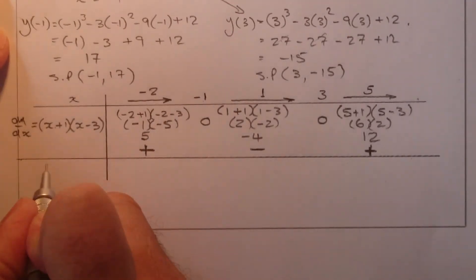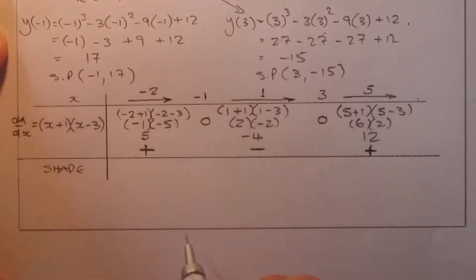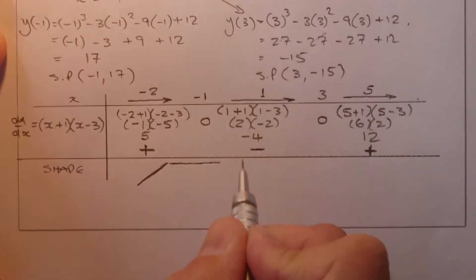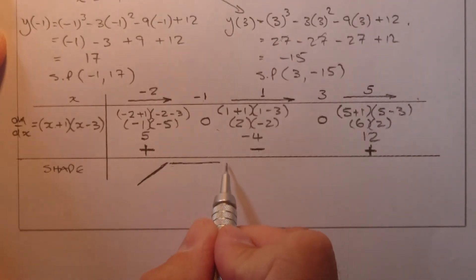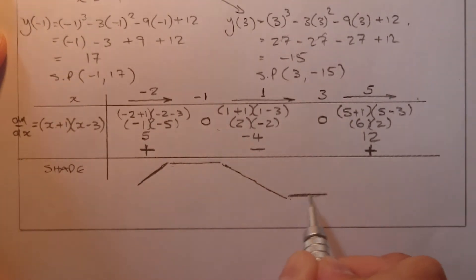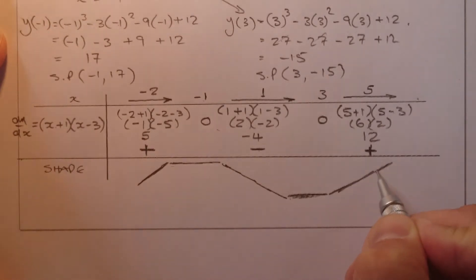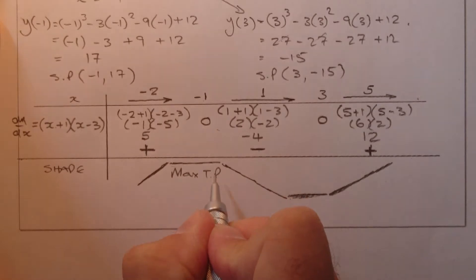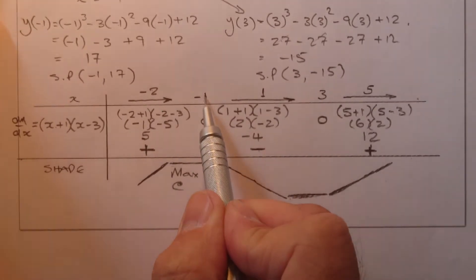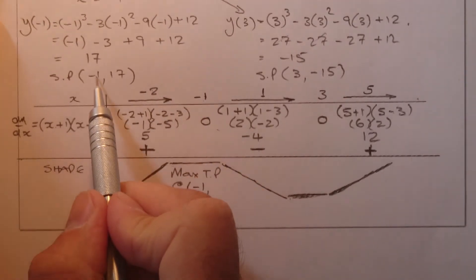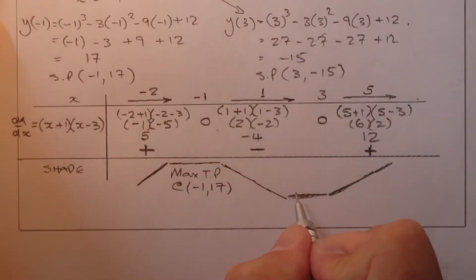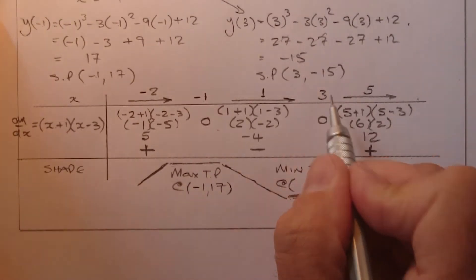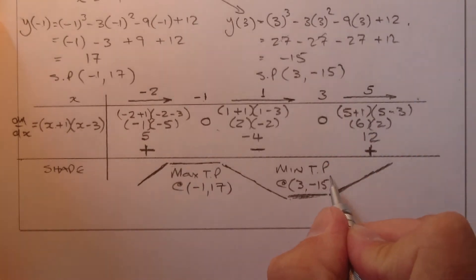Looking at the shape of the graph: the gradient is positive before minus 1, zero and flat at minus 1, negative between the two points, zero and flat at 3, then positive again beyond 3. So at x equals minus 1, I have a maximum turning point with coordinates (minus 1, 17), and at x equals 3, I have a minimum turning point with coordinates (3, minus 15).